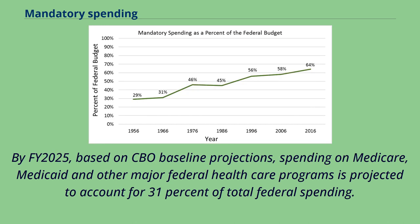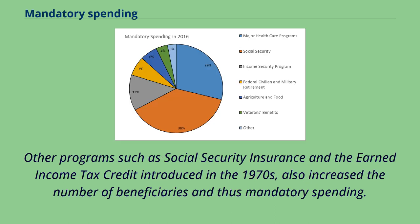By FY 2025, based on CBO baseline projections, spending on Medicare, Medicaid, and other major federal healthcare programs is projected to account for 31% of total federal spending. Other programs such as Social Security Insurance and the Earned Income Tax Credit, introduced in the 1970s, also increased the number of beneficiaries and thus mandatory spending.